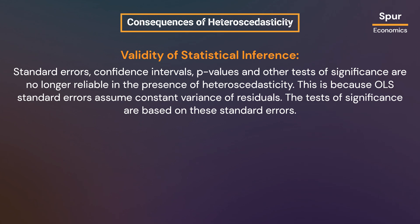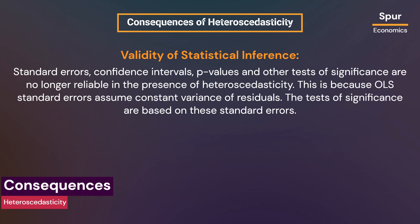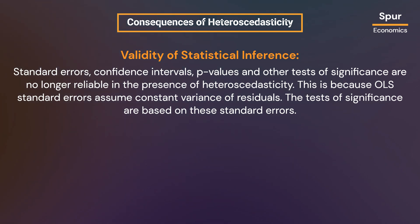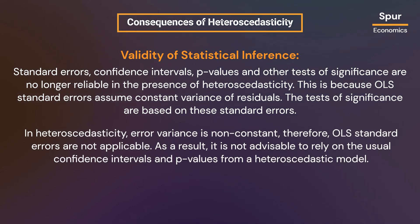Standard errors, confidence intervals, p-values, and other tests of significance are no longer reliable in the presence of heteroscedasticity. This is because OLS standard errors assume constant variance of residuals, and tests of significance are based on these standard errors. In heteroscedasticity, error variance is non-constant, so OLS standard errors are not applicable. As a result, it is not advisable to rely on the usual confidence intervals and p-values from a heteroscedastic model.